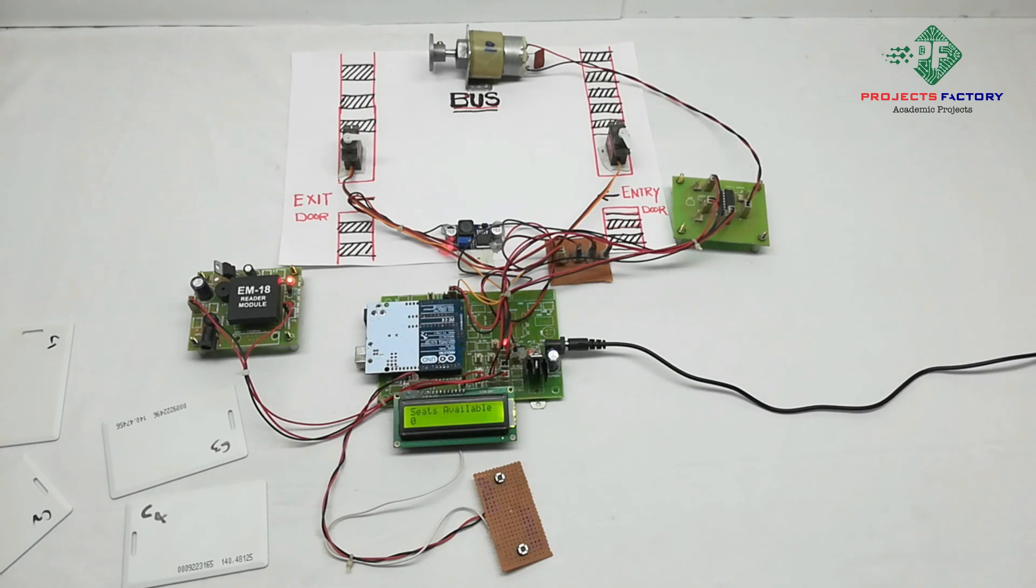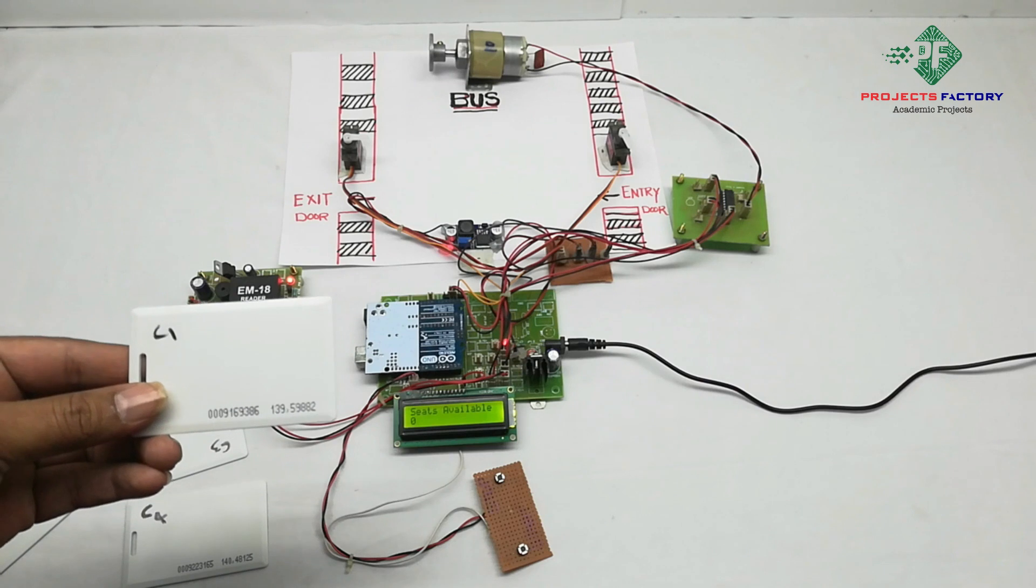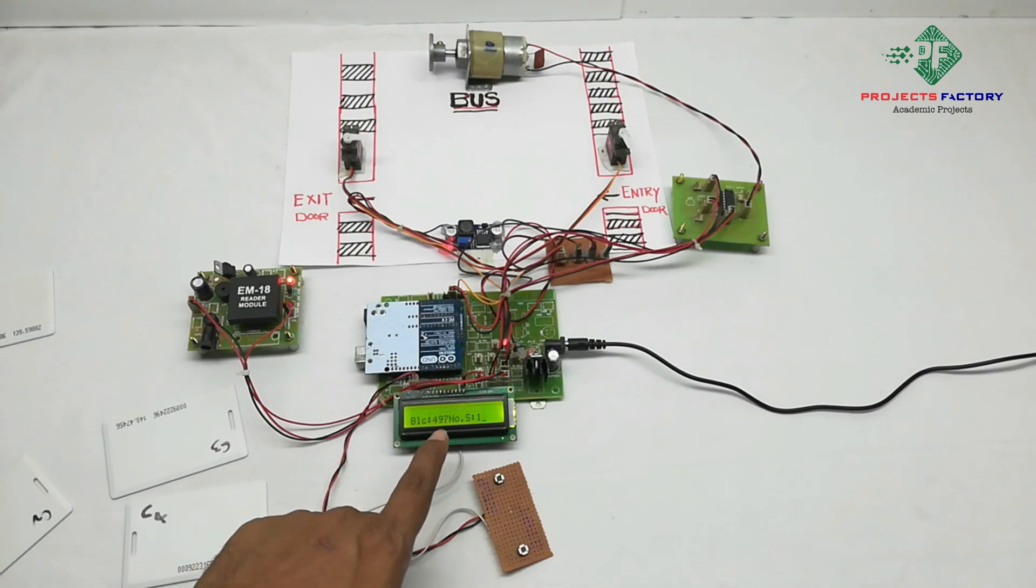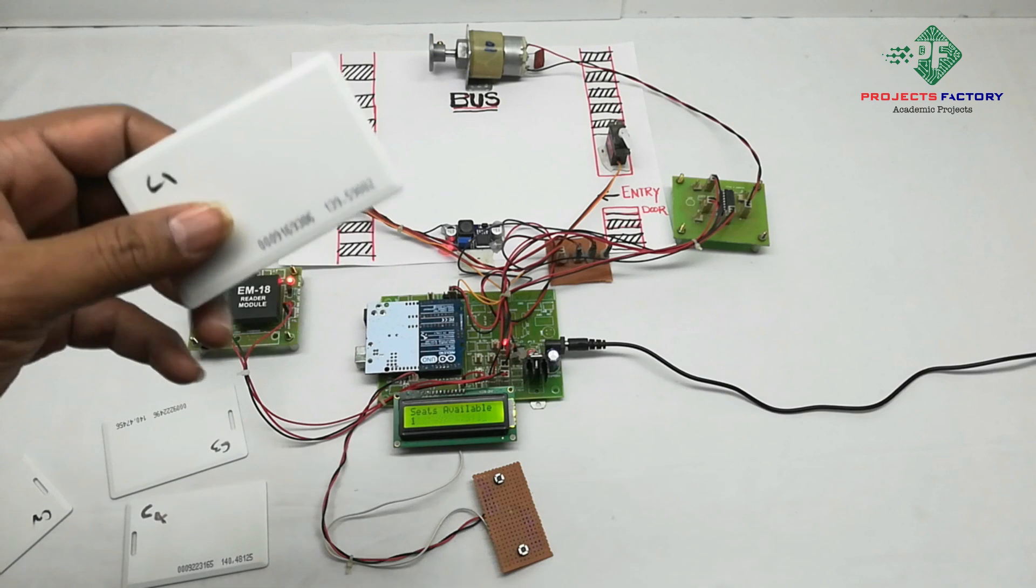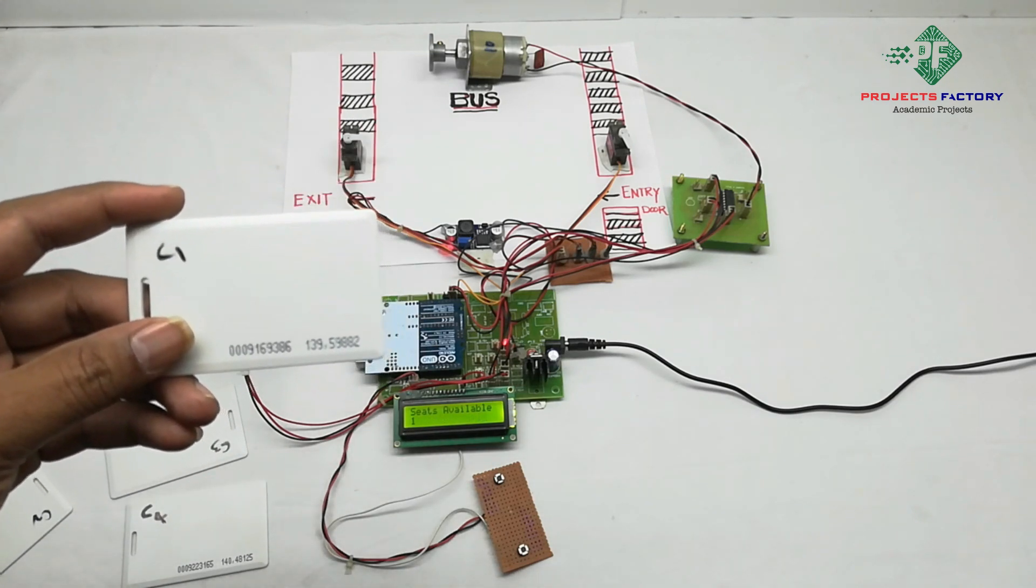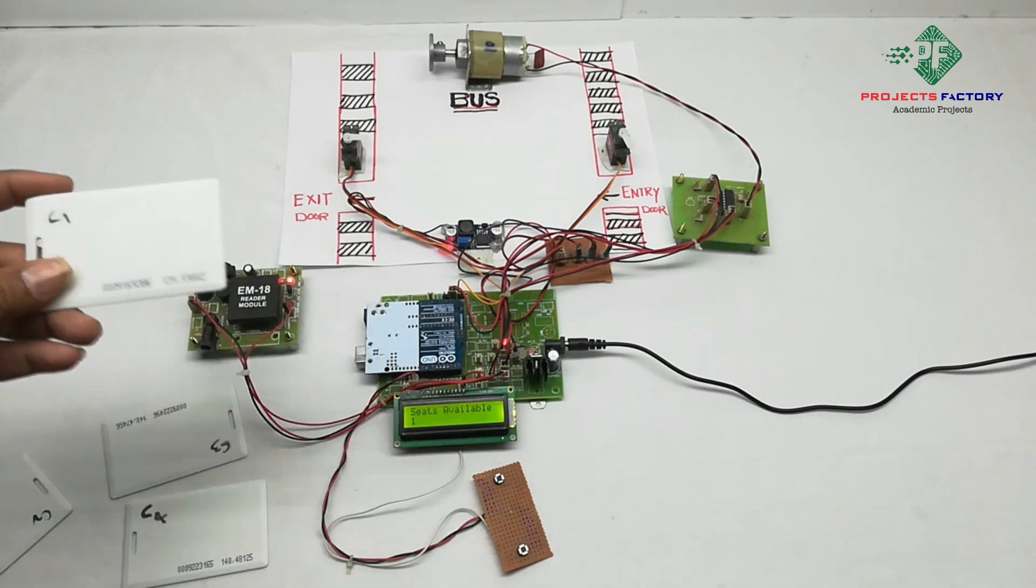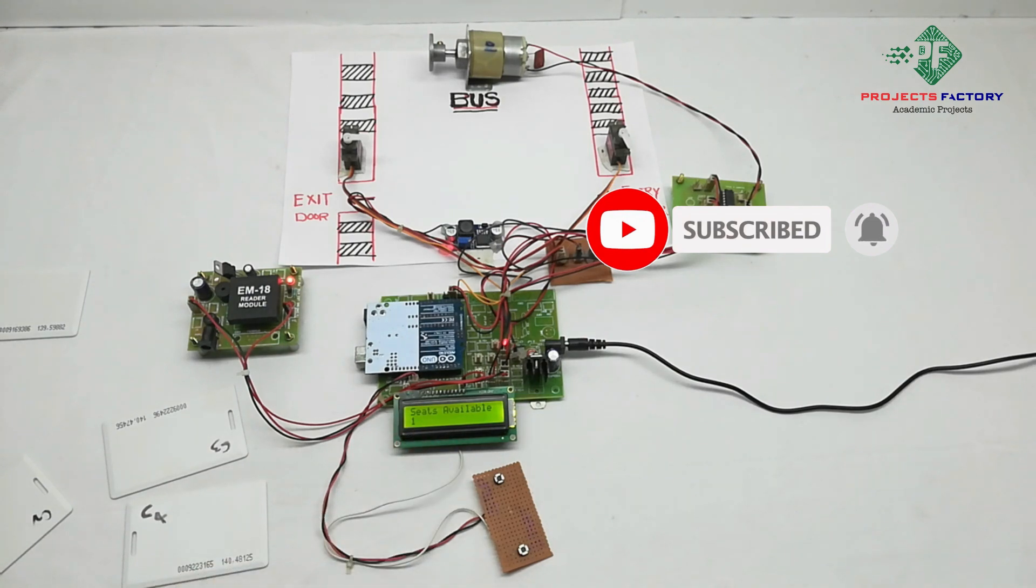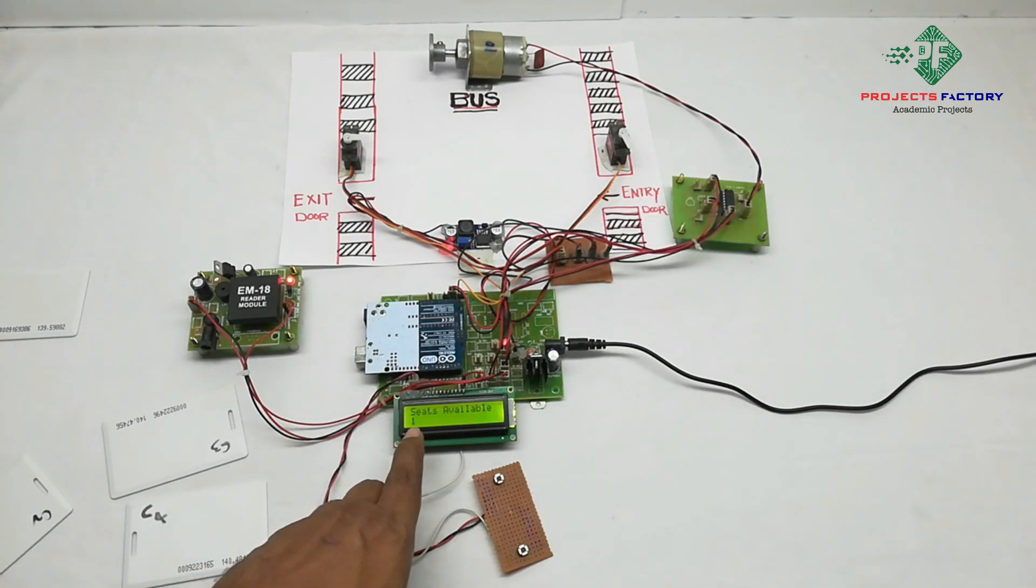At this stop, we drop passenger 1. Passenger 1 out - 3 rupees deducted because passenger 1 crossed 3 stops. Travel distance means the number of stops crossed. Remaining balance is 497 rupees, and it's showing seats availability 1.